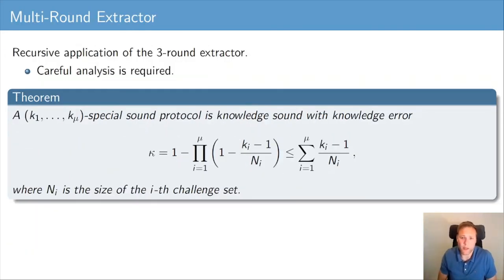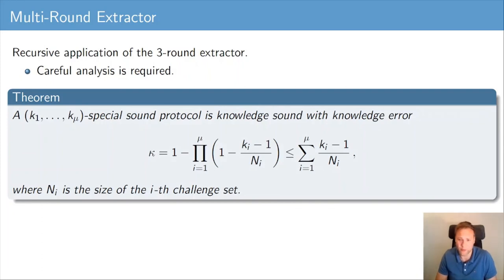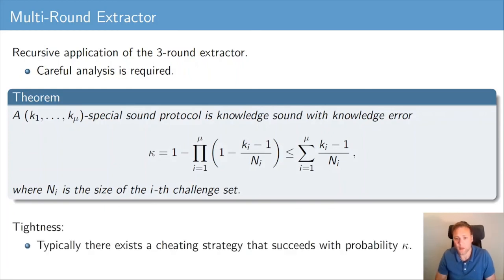Thus far we described the extractor and its analysis for three-round special sound protocols. This extractor immediately generalizes to k-special sound protocols (still three-round but k-special sound instead of 2-special sound). Moreover, we can apply this extractor recursively to the multi-round scenario. With careful analysis, we obtain a theorem showing that (k₁, ..., kμ)-special soundness implies knowledge soundness with a precise tight knowledge error κ. Furthermore, this expression for the knowledge error is tight: typically there exists a cheating strategy for (k₁, ..., kμ)-special sound protocols succeeding with probability κ, so we cannot hope for a smaller knowledge error for this generic class.